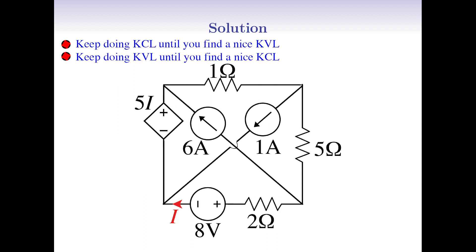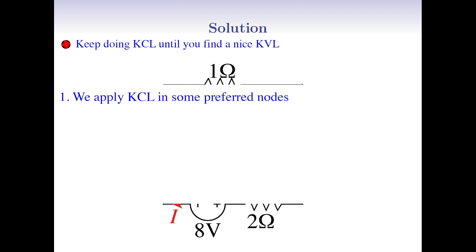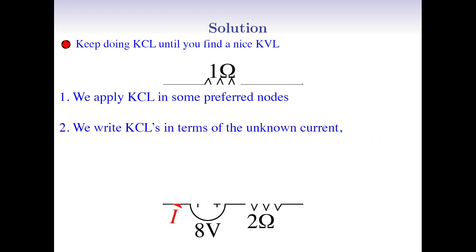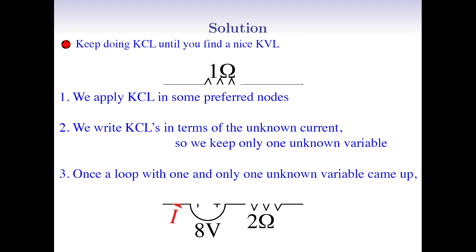Let's see how this method works. The procedure is simple. First, we write KCL for some good nodes. We try to keep our KCLs only dependent on one unknown variable as long as possible. Then, we try to continue to play with the KCLs until the nodes around a loop have been considered. Then we apply KVL, and since we kept only one unknown variable, the equation we get out of KVL is a simple one-variable algebraic equation. Don't worry if you find it perhaps confusing — we're going to walk through it in our problem.